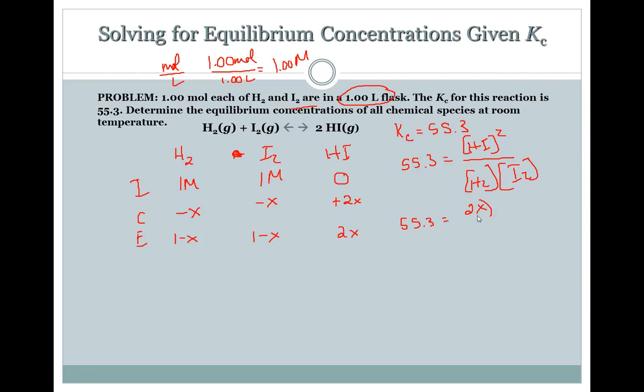We plug in our concentrations at equilibrium. This one's squared. And then 1.34 squared once again. That comes out to be 0.0801.